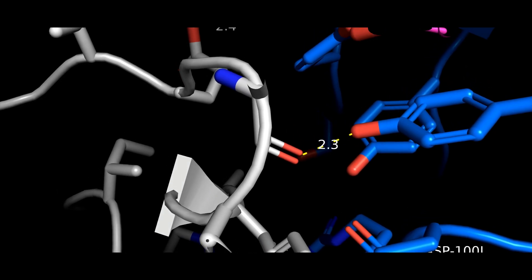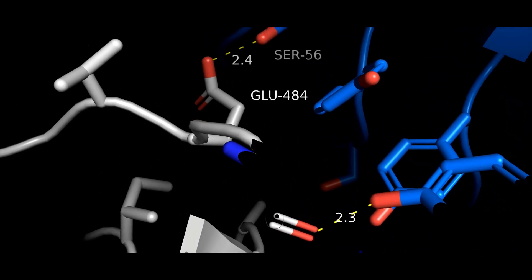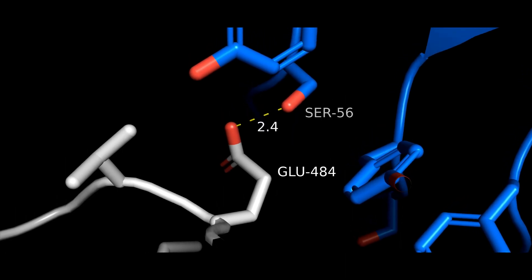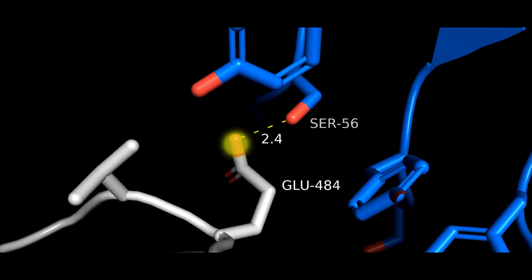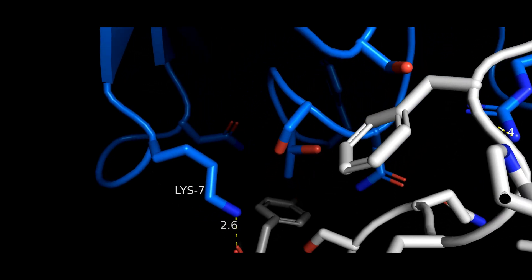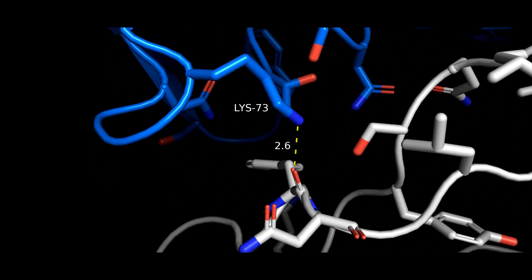Another side chain side chain interaction that promotes antibody binding is this hydrogen bond between this negatively charged glutamate and the hydrogen of the serine hydroxyl group. Side chain backbone interactions also promote binding, like the interaction of this positively charged lysine with this carbonyl group on the protein main chain.